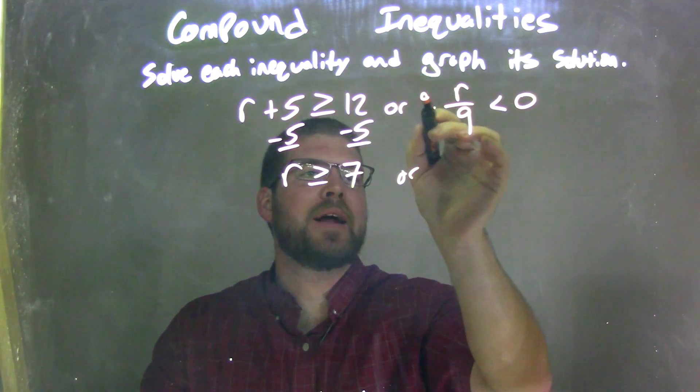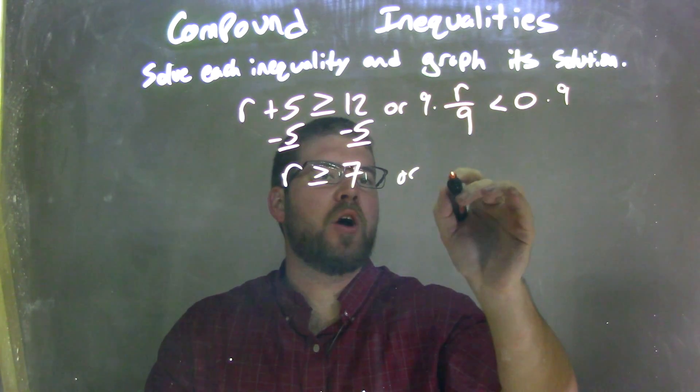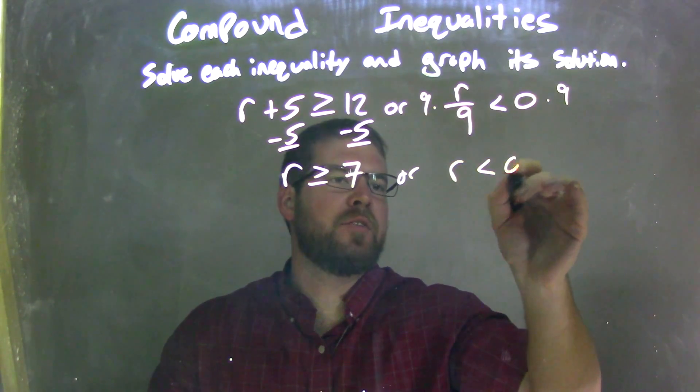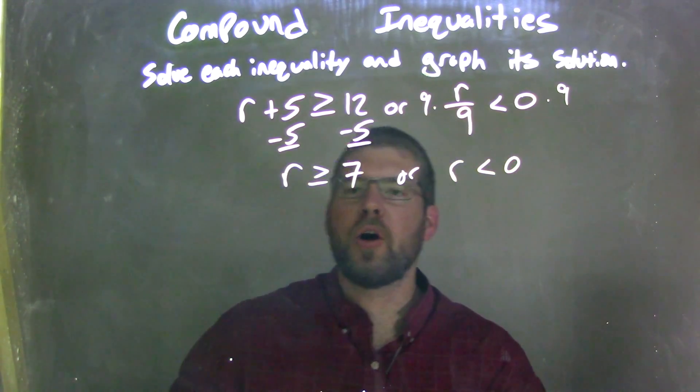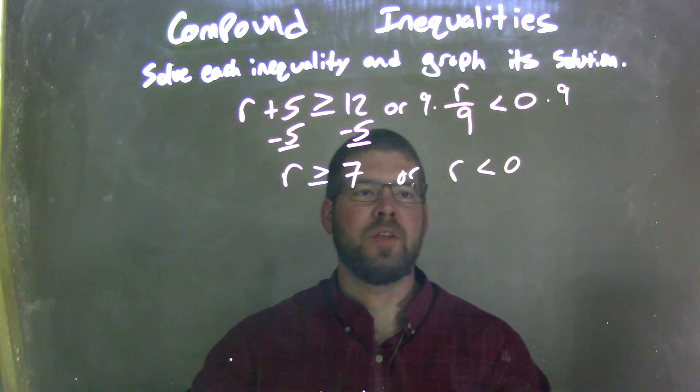Or this one here, I'm going to multiply 9 to both sides, leaving me r by itself, and 0 times that is 0. So now I have r is greater than or equal to 7, or r is less than 0.